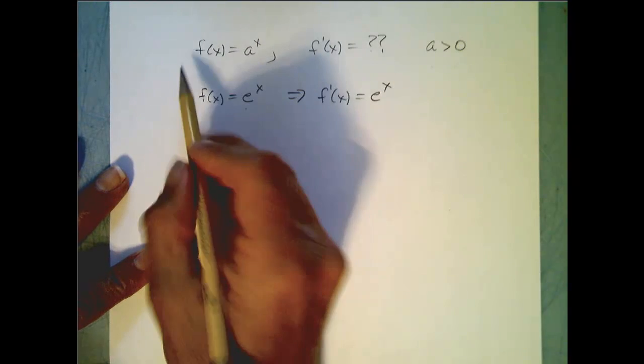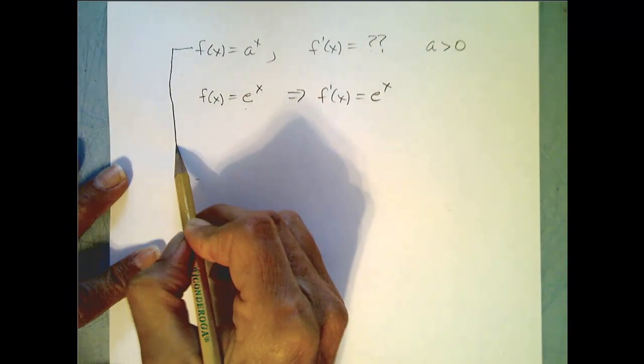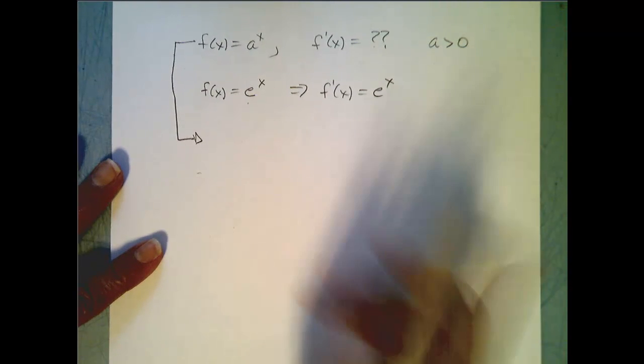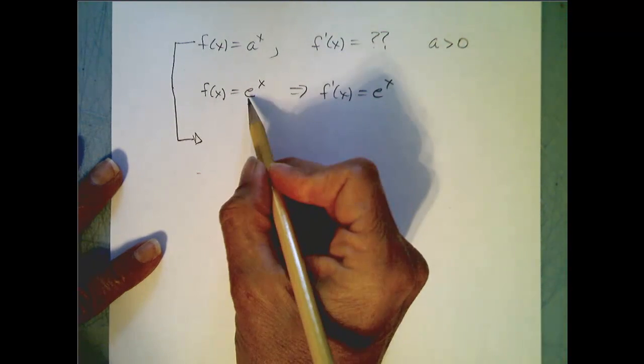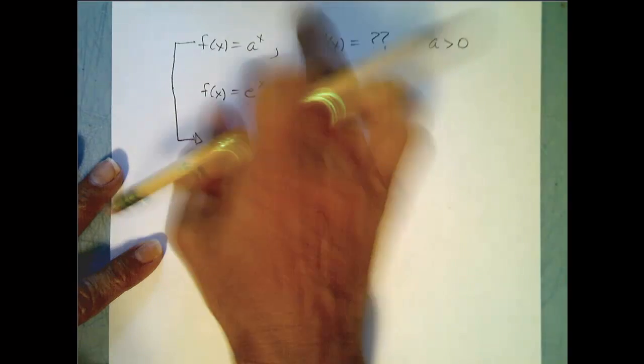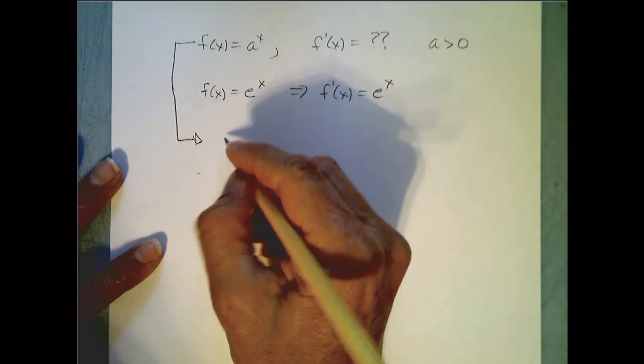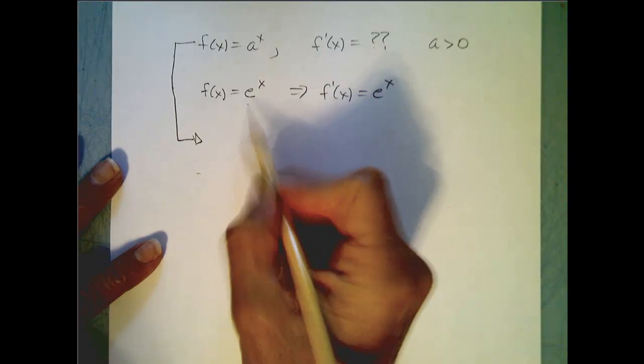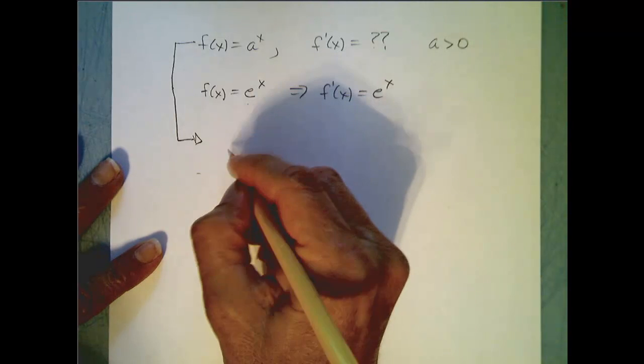So we are interested in finding out what the derivative of a to the x is for all the other values of a. Now we are going to use what we know in order to answer what we don't know. In particular I am going to use the properties of the exponential function.